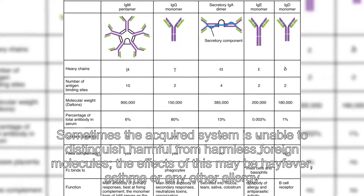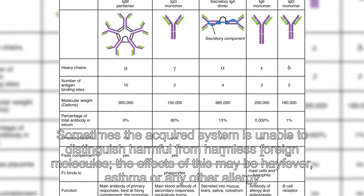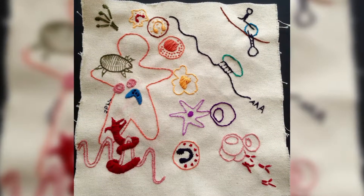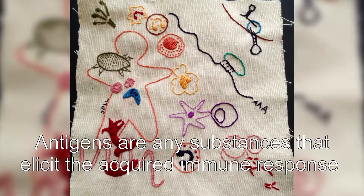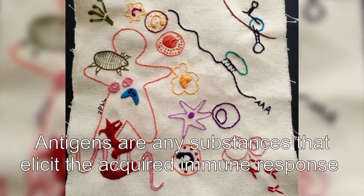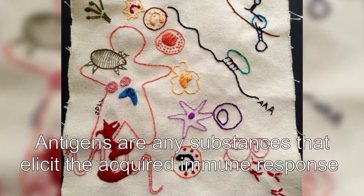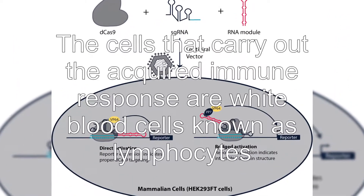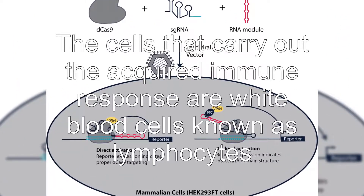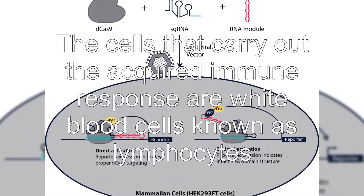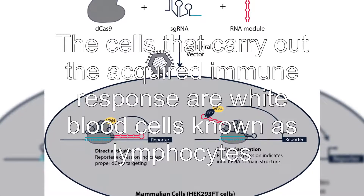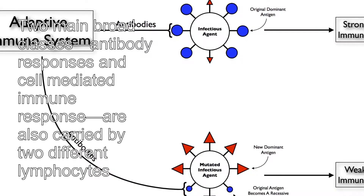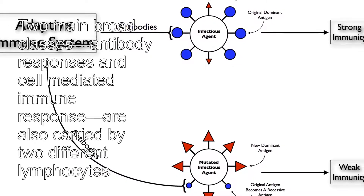Unlike the innate immune system, the acquired immune system is highly specific to a particular pathogen. Acquired immunity can also provide long-lasting protection — for example, someone who recovers from measles is now protected against measles for their lifetime. In other cases it does not provide lifetime protection, for example chickenpox. The acquired system response destroys invading pathogens and any toxic molecules they produce.